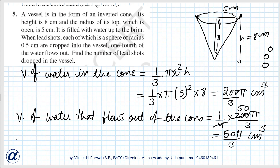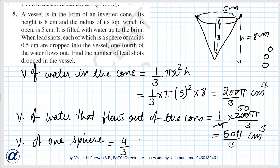Now, the volume of one sphere equals four-thirds π r³, where r is 0.5 centimeters, so that is four-thirds π times 0.5³.